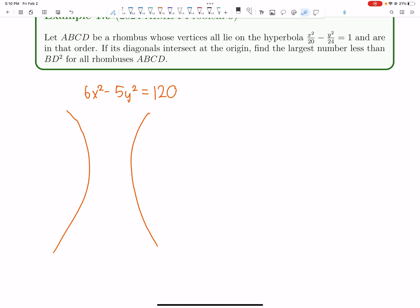Now we're placing a rhombus on this hyperbola. We're asked to find the largest number less than BD² for all rhombuses - basically the minimum value of BD², like an open interval lower bound. The key fact here is that diagonals intersect at the origin.